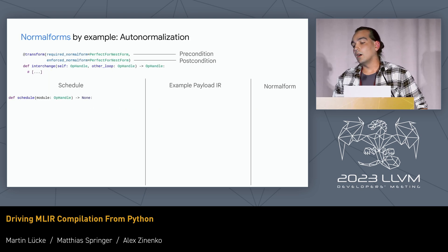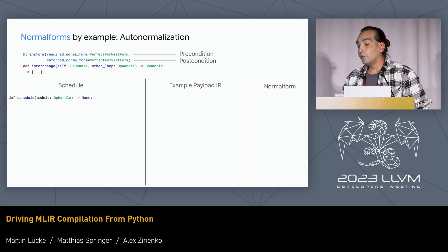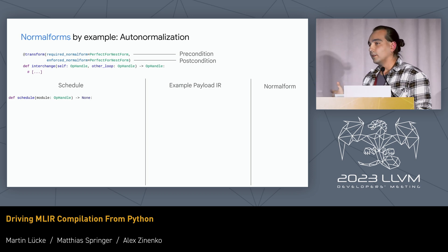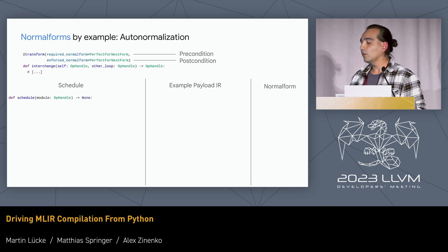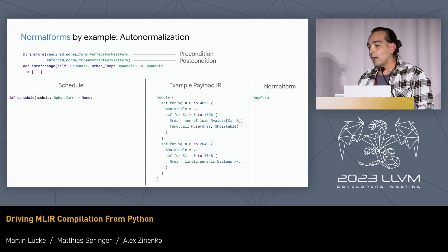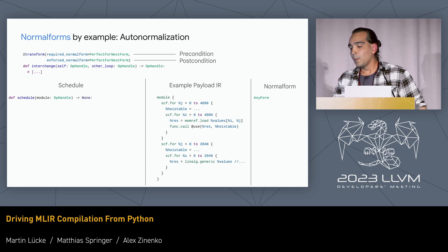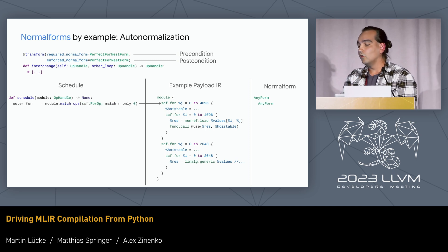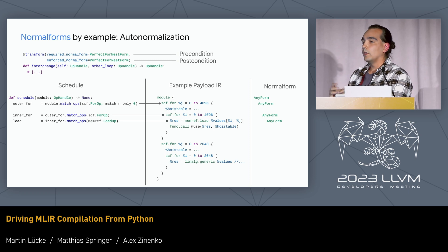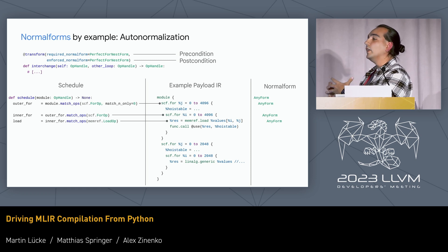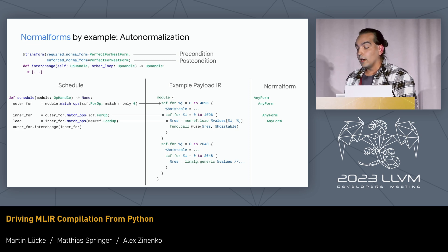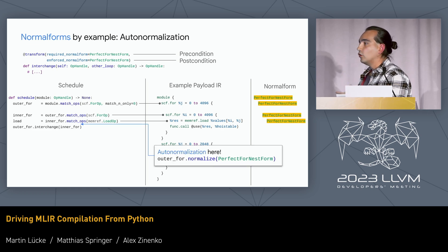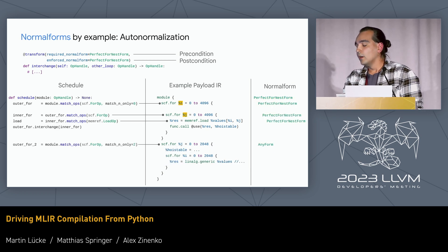Let's look at a small example. We have our interchange transform defined with, as precondition, the perfect for nest form. The interchange just interchanges two loops — it doesn't destroy this form — so the postcondition is also perfect for nest form. In our example we have a module of two for nests. We start with a handle to our module, then match the outer for loop, the inner for loop, and the memref inside. We know nothing about these handles — they're all in the weakest normal form. Then we do the interchange. We know it requires a specific normal form, so we automatically inject the normalization to perfect for nest form. These handles are then in that form, and we actually do the interchange and continue.